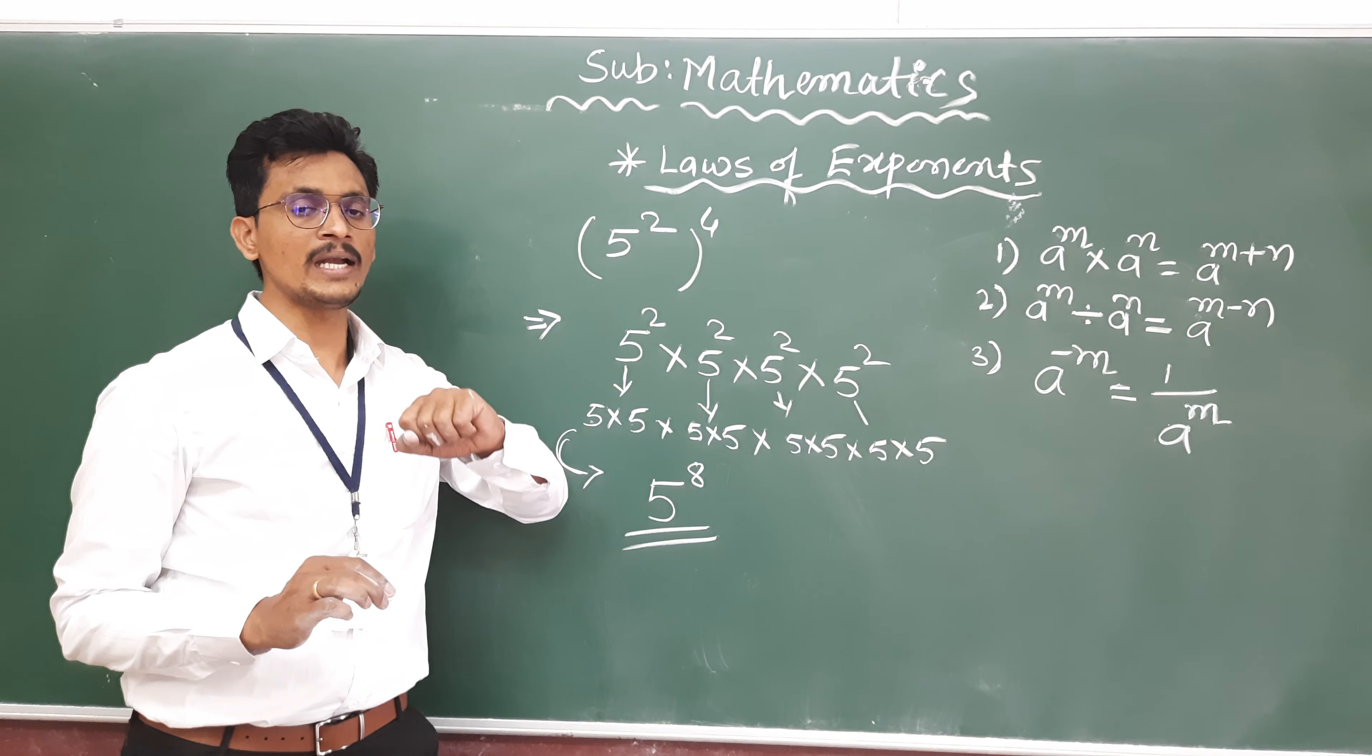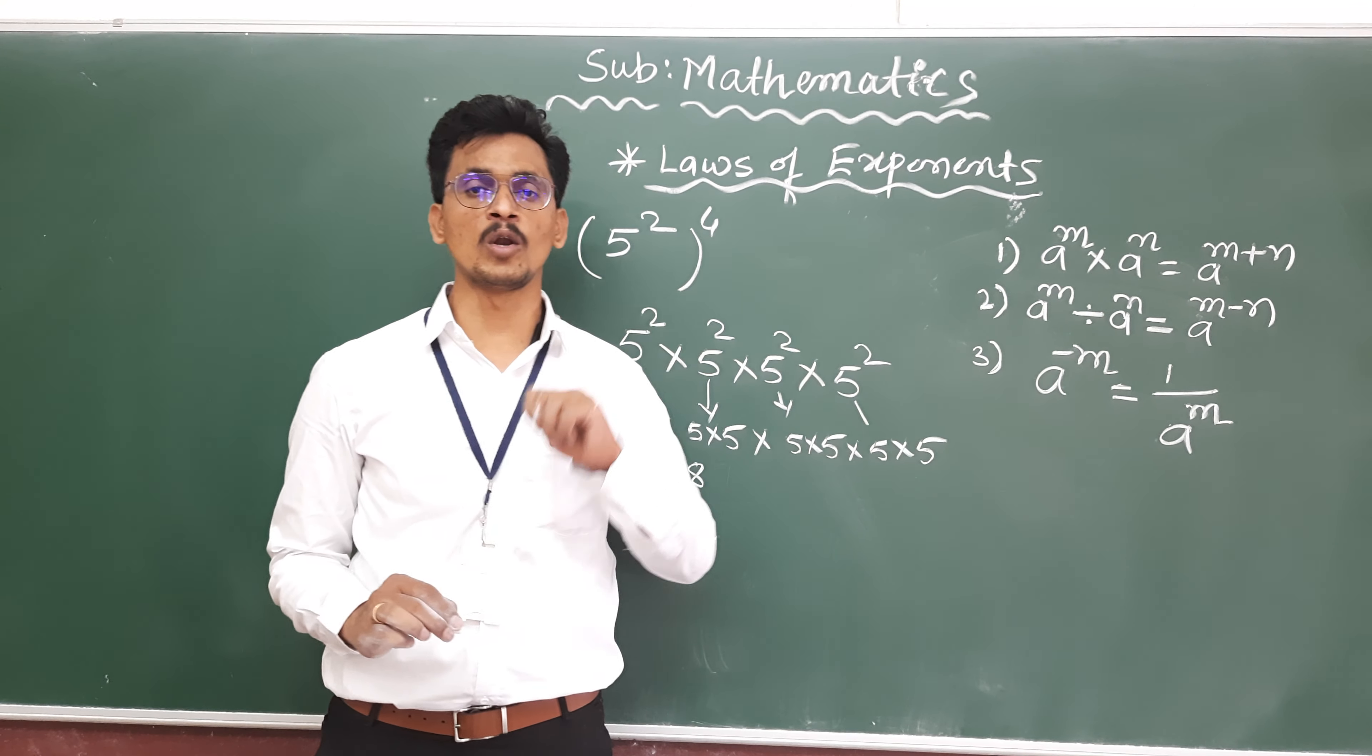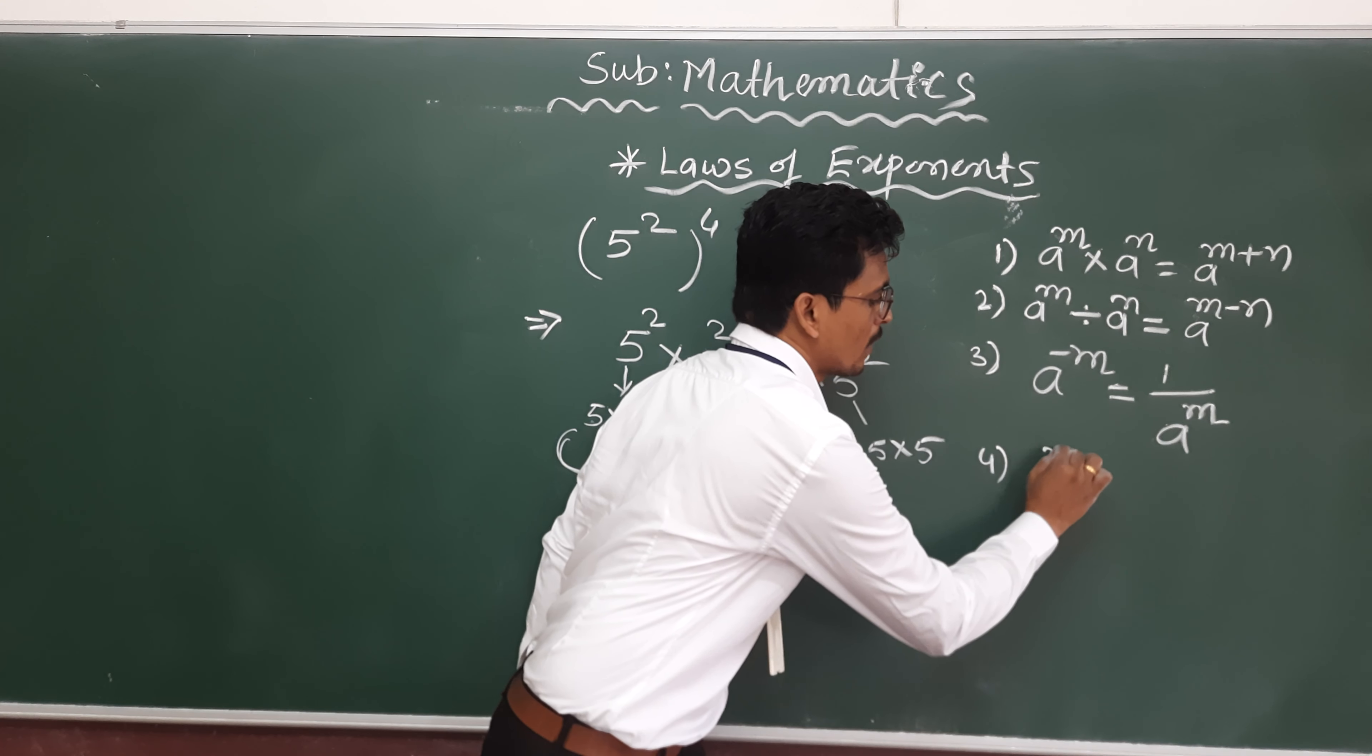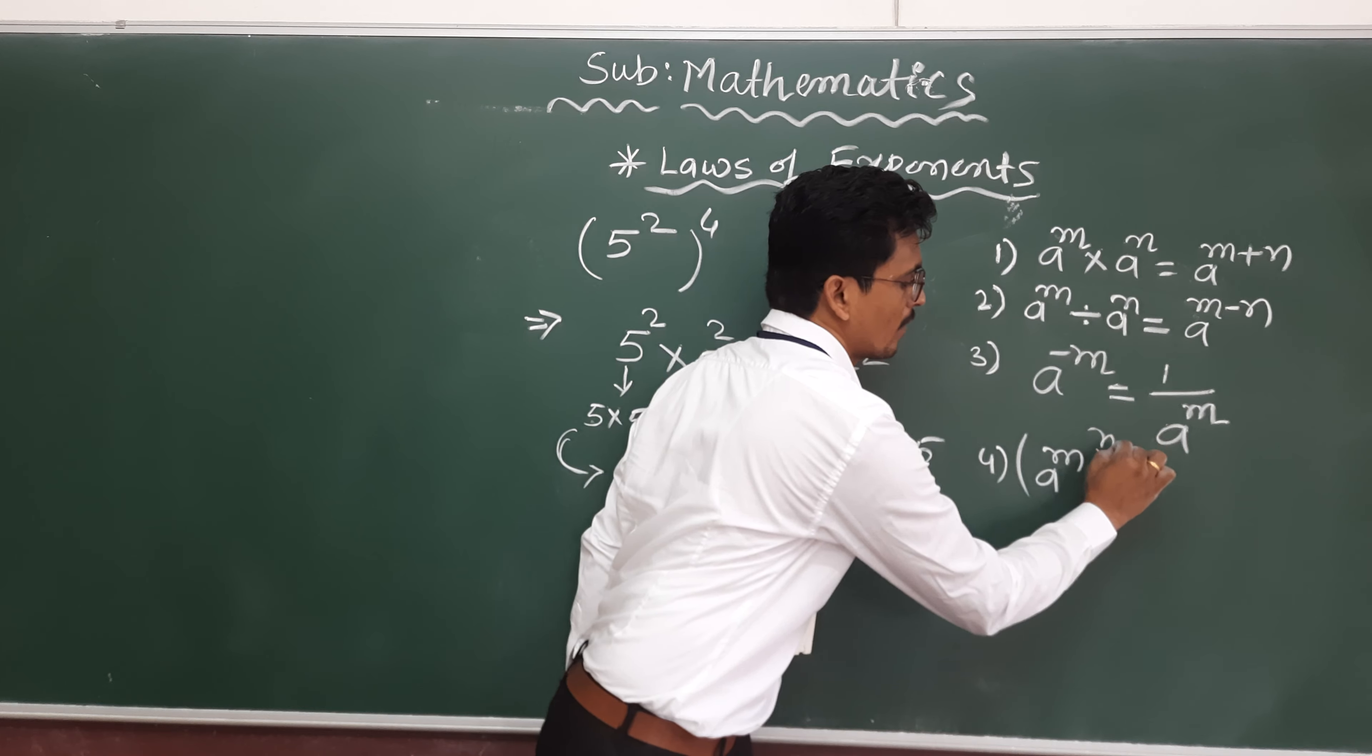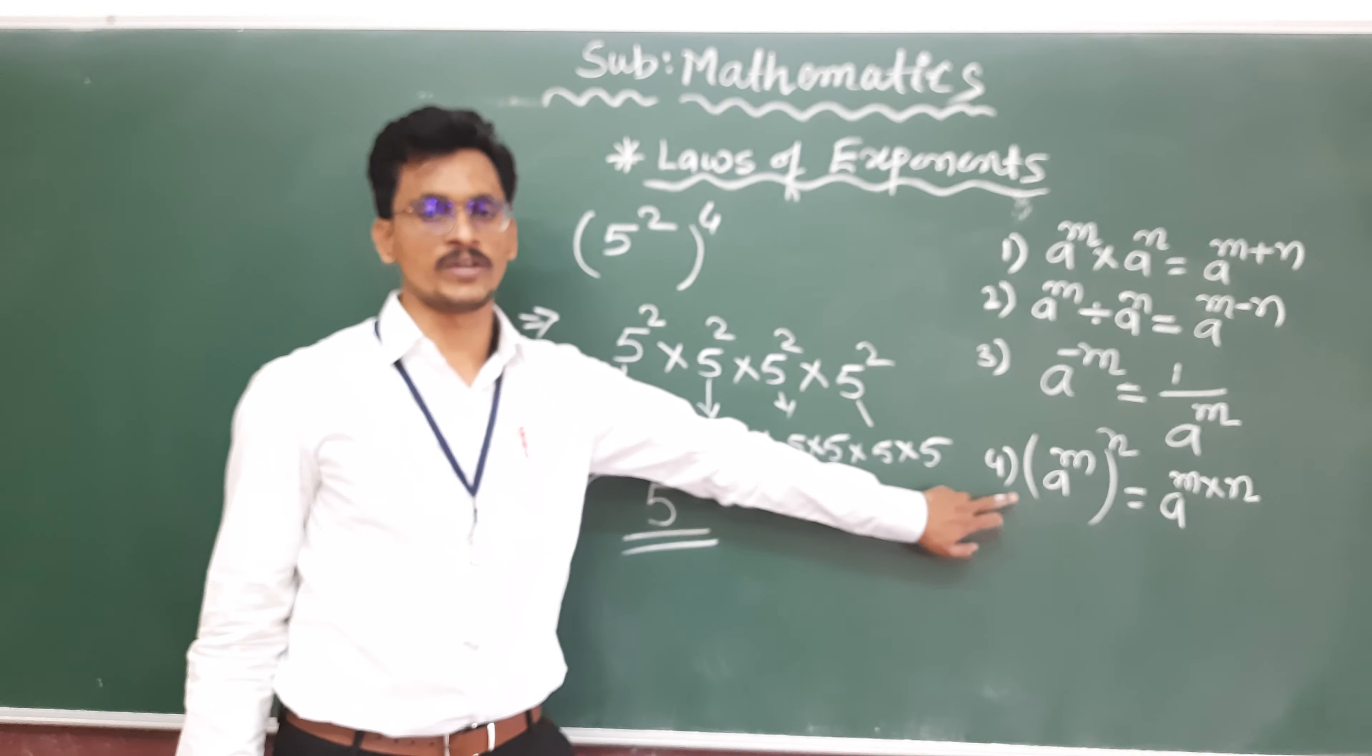It means that we will get another law, fourth law of exponent: that is a raised to power m in bracket, raised to power n. Then we should multiply the power m into n. So this is our fourth law of exponents.